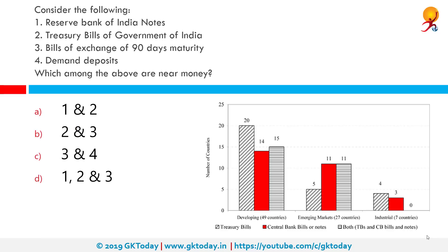Consider the following: 1. Reserve Bank of India Notes, 2. Treasury Bills of Government of India, 3. Bills of Exchange of 90 Days Maturity, 4. Demand Deposits. Which among the above are near money? The correct answer is 2 and 3 — Treasury Bills of Government of India and Bills of Exchange of 90 Days Maturity. Treasury Bills are presently issued in 3 maturities: 91 day, 182 day, and 364 day. They are zero coupon securities and pay no interest; rather they are issued at a discount and redeemed at face value at maturity.